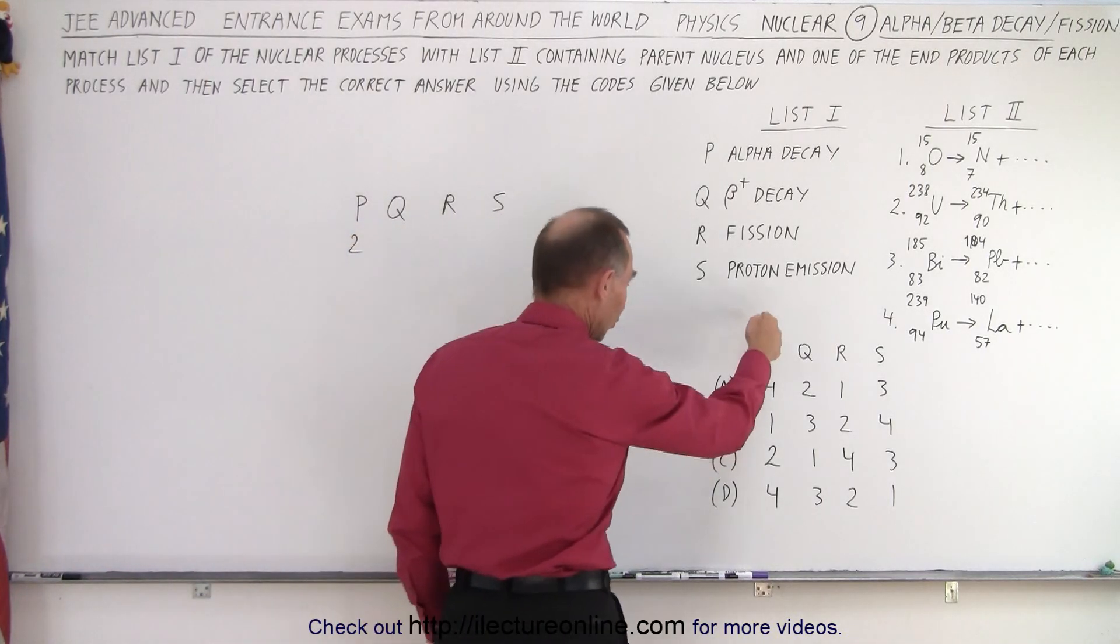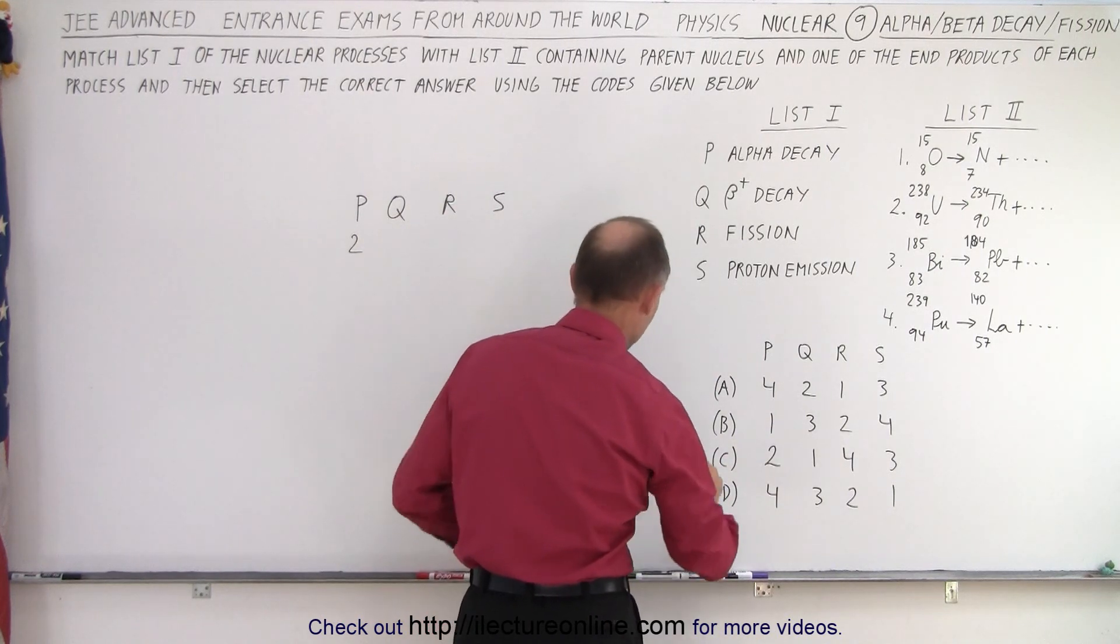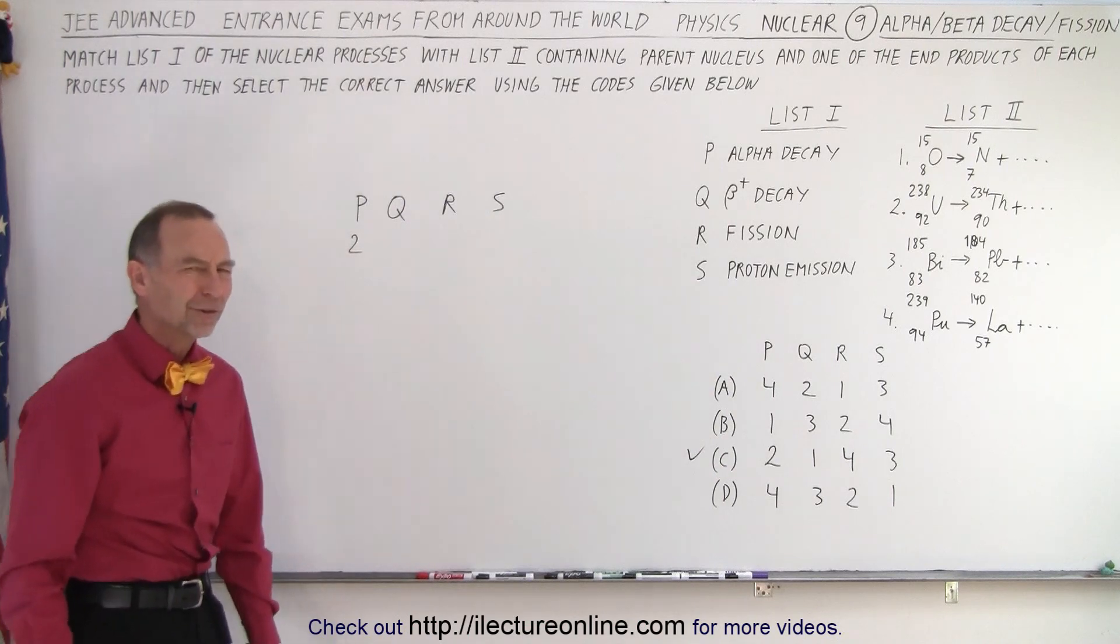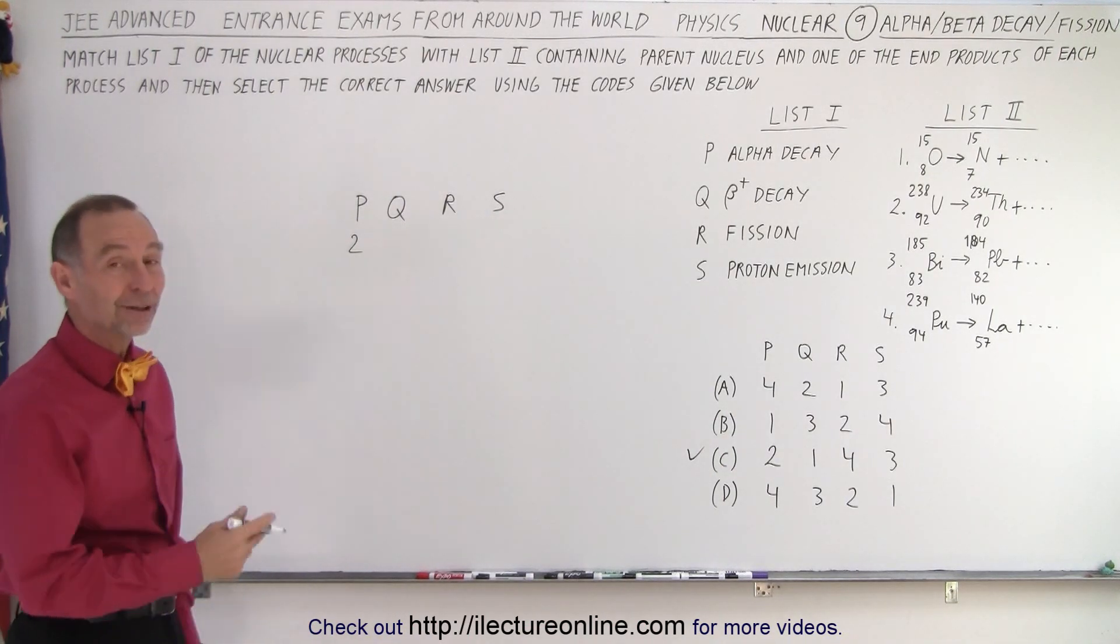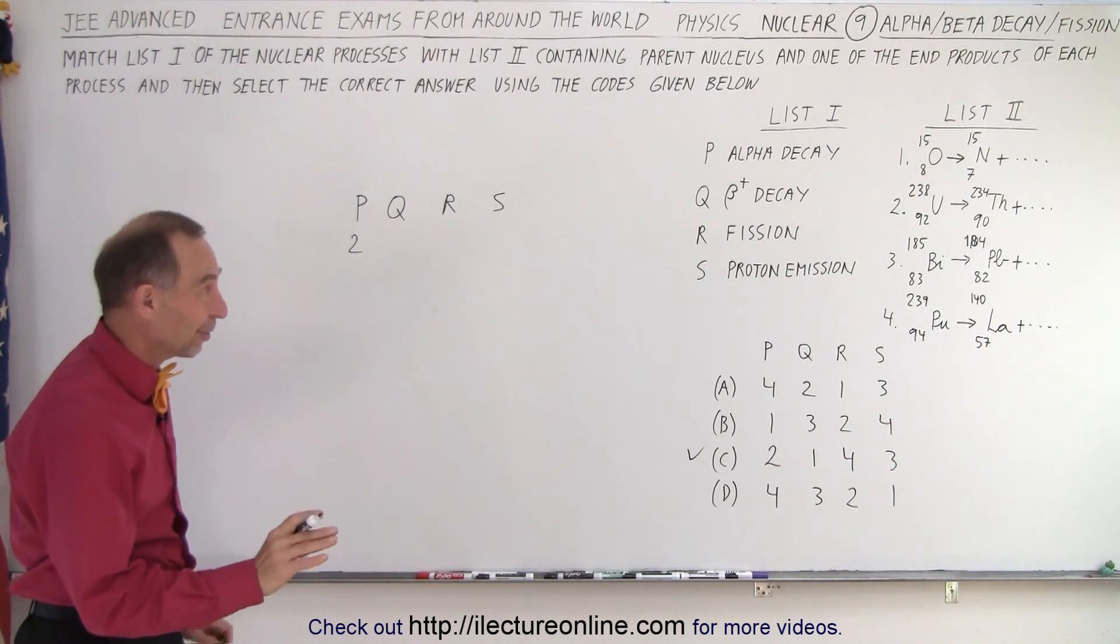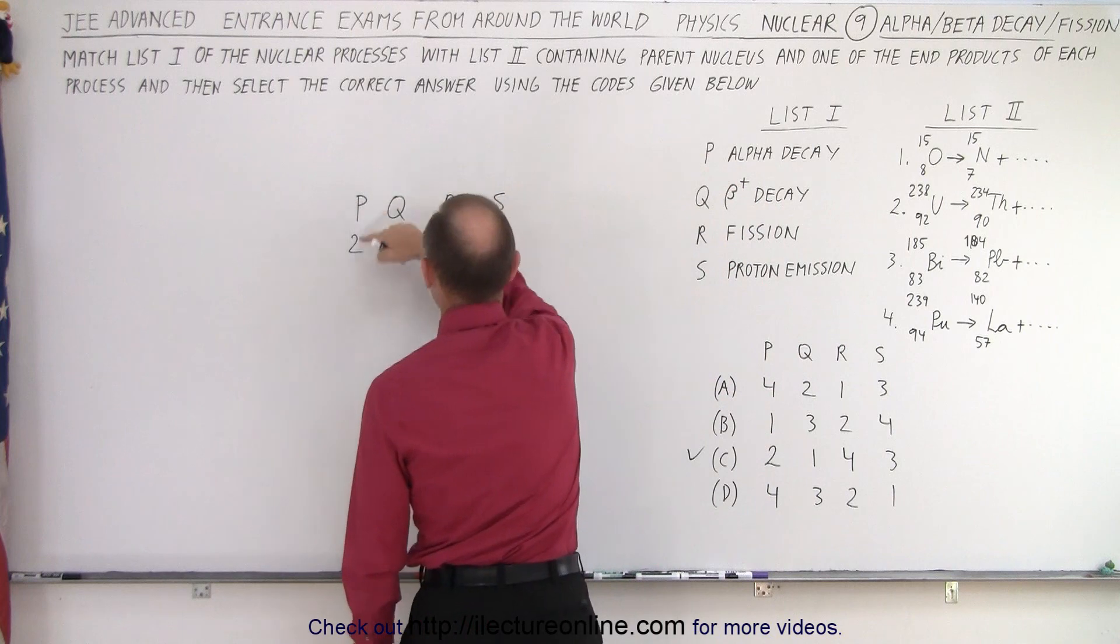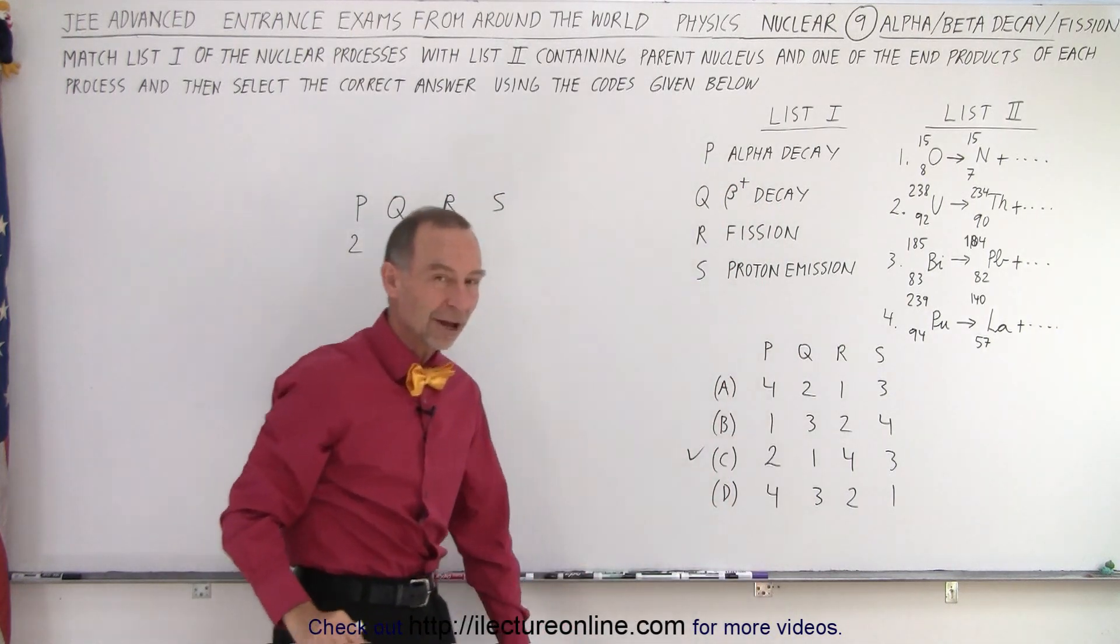Let's see here. Notice there's only one answer where P equals two. Answer C. Done. Move on to the next problem. Of course, you may want to ensure yourself you did this correctly by maybe doing some of the other ones as well. But hey, if you're very sure that this is an alpha decay and you know that P matches up with two and that's the only place where two appears for P I would say you're done. Move on.